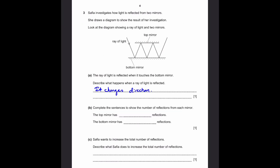Part B: complete the sentences to show the number of reflections from each mirror. The top mirror has two reflections — we can see that the top mirror reflects two times, so you write two. And the bottom mirror reflects three times. That's the answer.